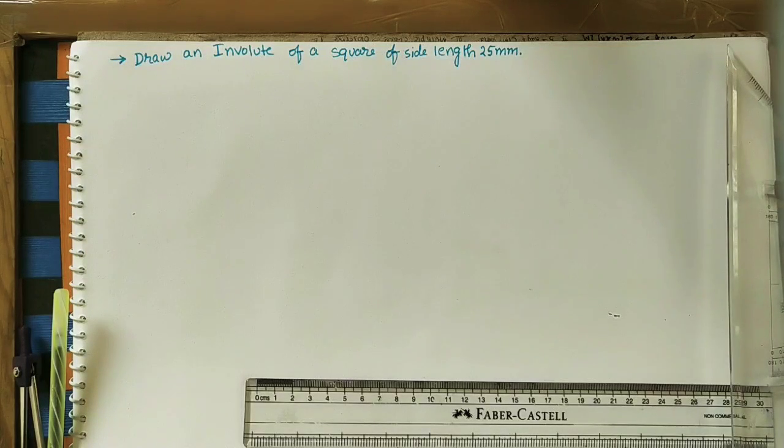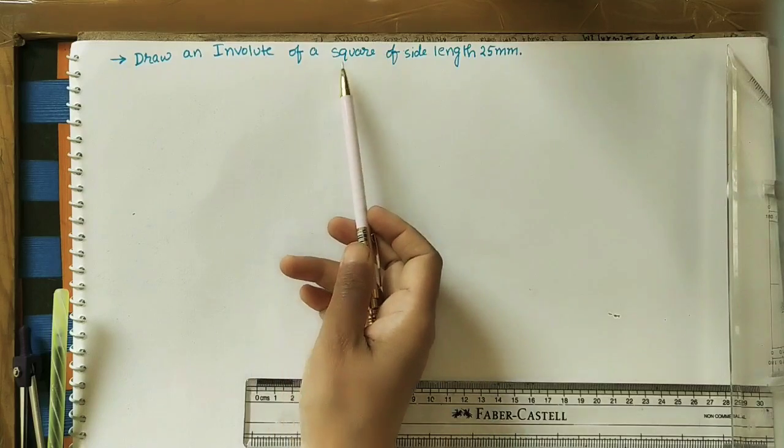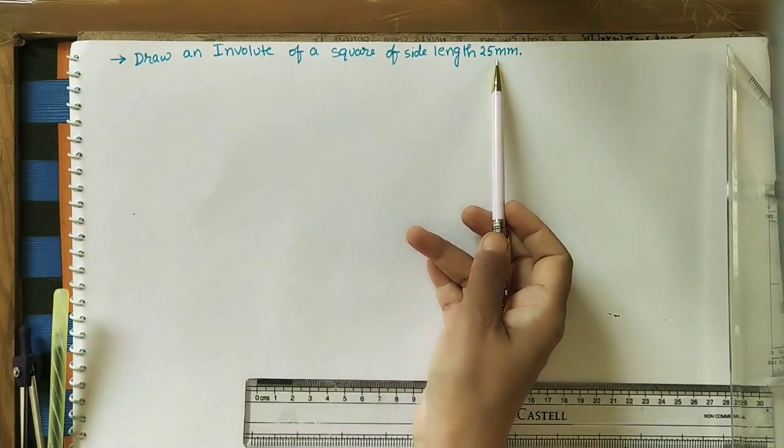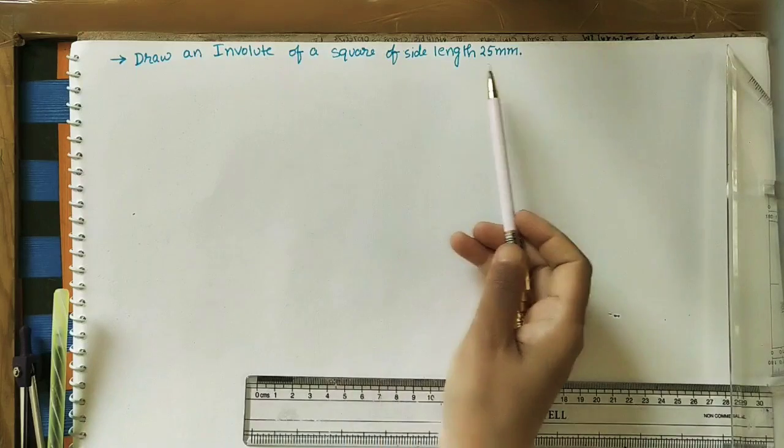Hi to all, today we will draw an involute for a given square. Take the question: draw an involute of a square of side length 25 mm. The side length of the square is 2.5 centimeters.